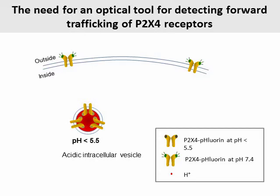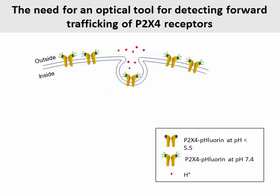To this end, we engineered P2X4 receptors to carry fluorine tags within the extracellular domain. Fluorine is a pH-sensitive green fluorescent protein, with its fluorescence quenched at acidic pH, but brightly fluorescent at neutral pH. When P2X4 receptors are secreted onto the plasma membrane, their pH environment changes from being acidic to being neutral. Thus, the fluorescence intensity from attached fluorine will dramatically increase when P2X4 receptors are secreted onto the plasma membrane.